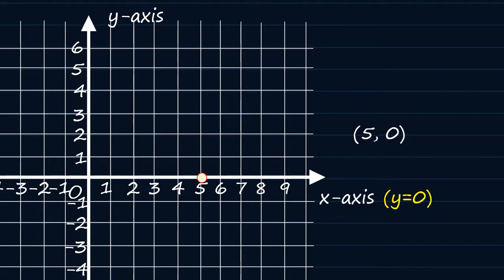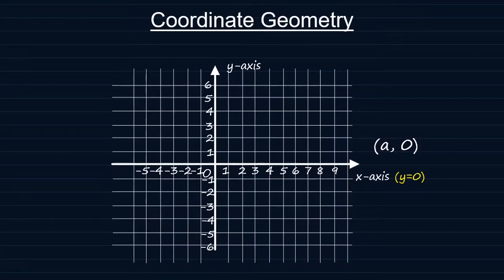Therefore, any point that lies on the x-axis has its coordinates in the form A, 0, where A can take the value of any real number and the y-coordinate is always 0. Similarly, all points on the y-axis take the form 0, B, where B is any real value on the y-axis. Notice that x is always 0 on the y-axis.